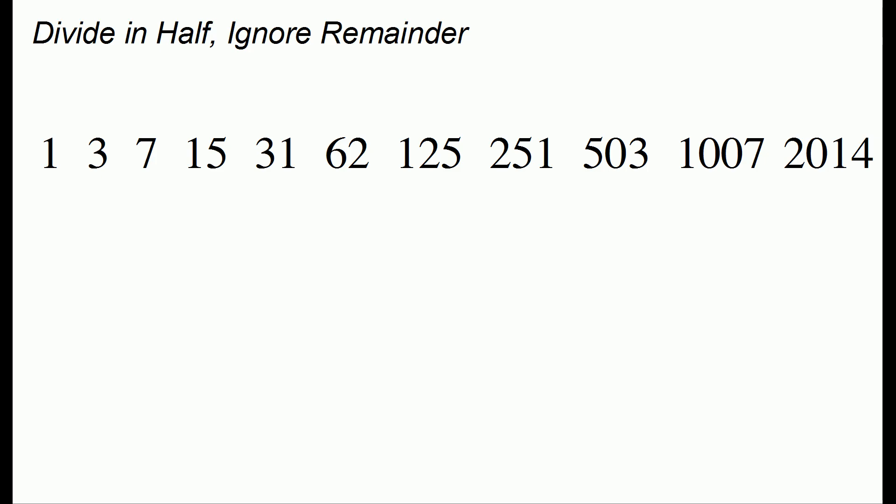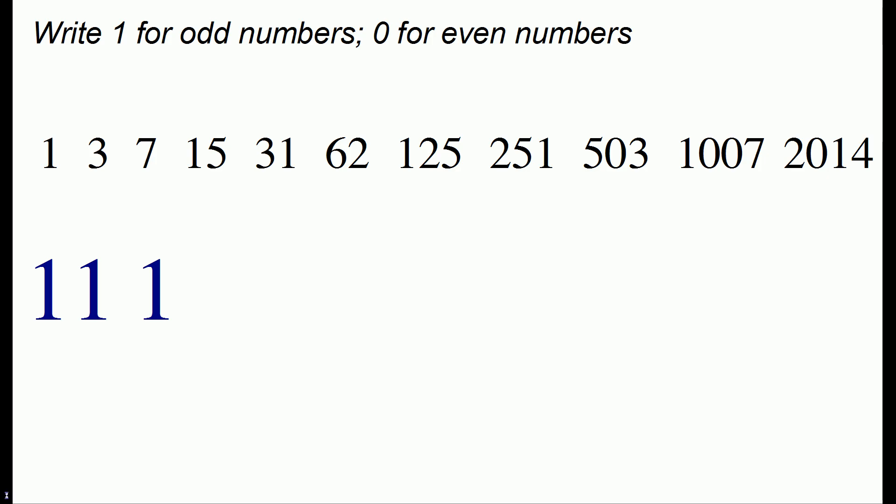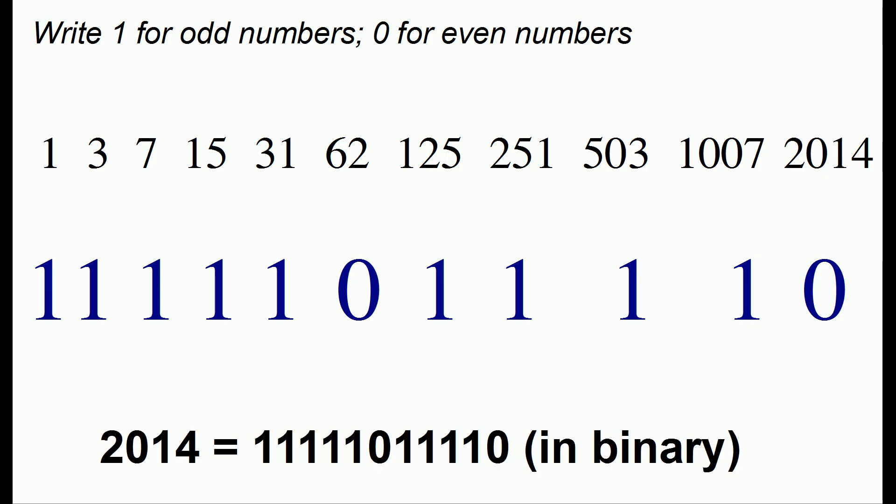Now once we're here we simply write a 1 below any of the odd numbers and a 0 below any of the even numbers. Once again this will give us the answer of 2014 in binary.